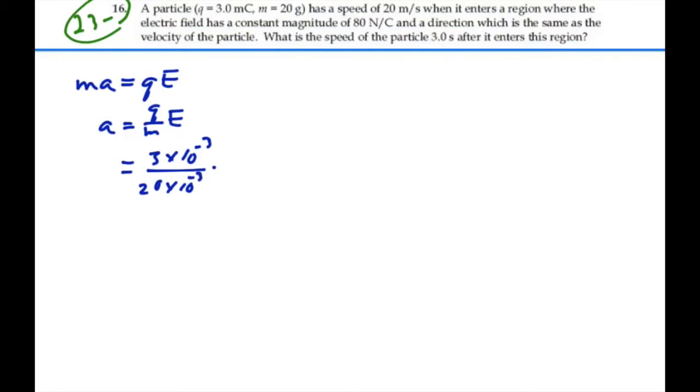times the E field was 80 newtons per coulomb. So our 10 to the minus 3 and our 10 to the minus 3 will cancel out. We'll have 80 divided by 20 times 3, which will give us 12 meters per second squared.